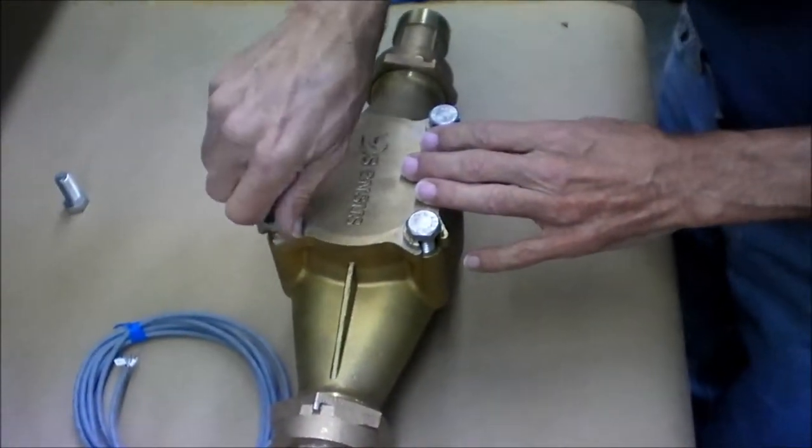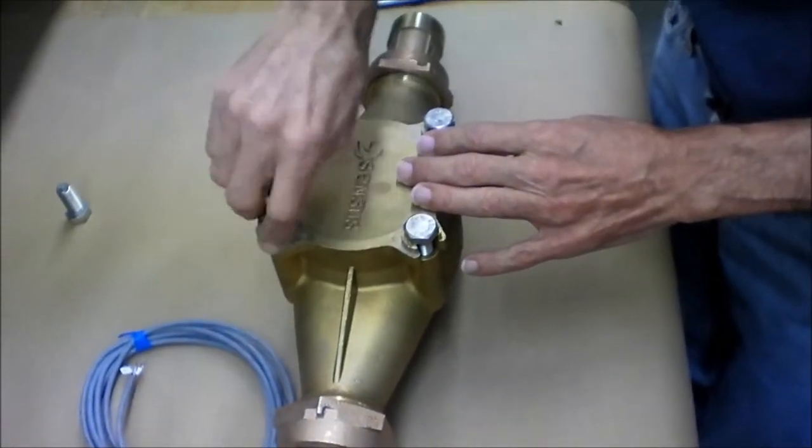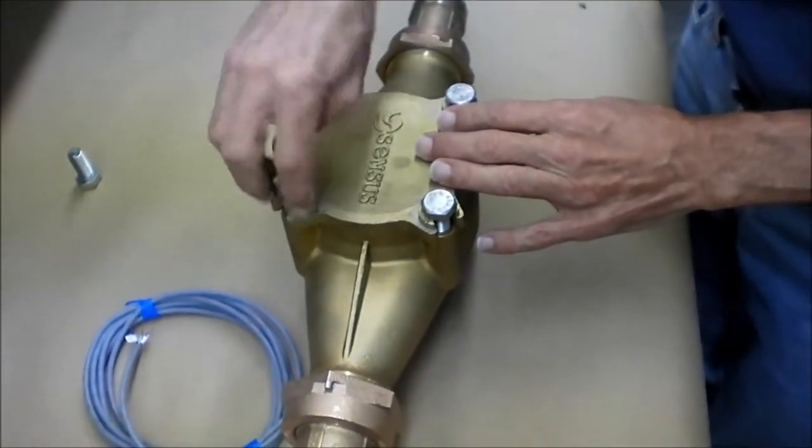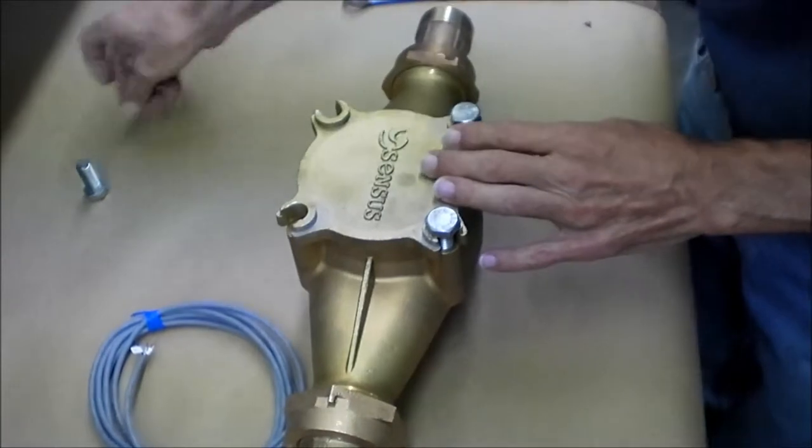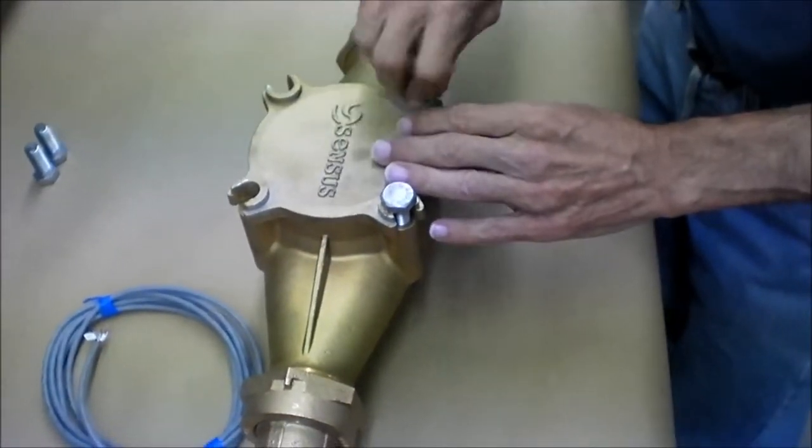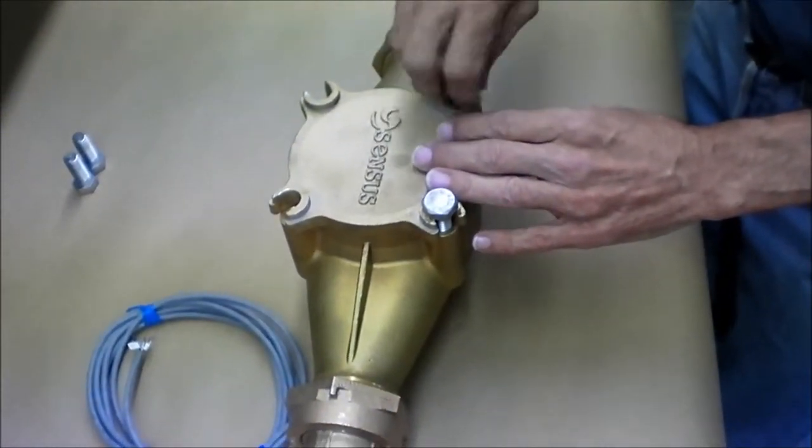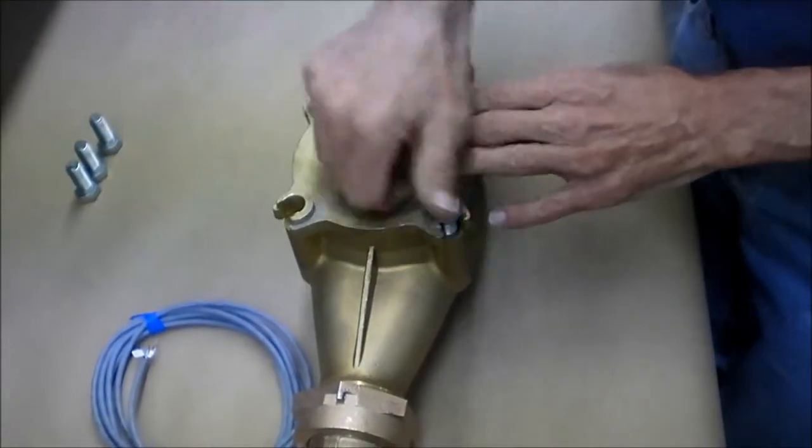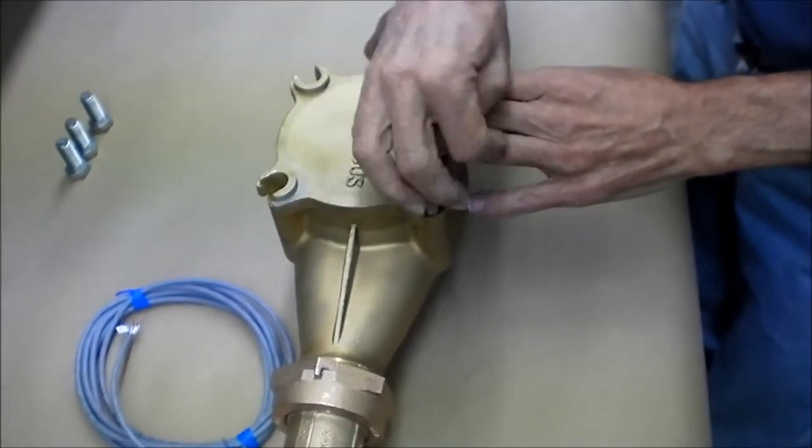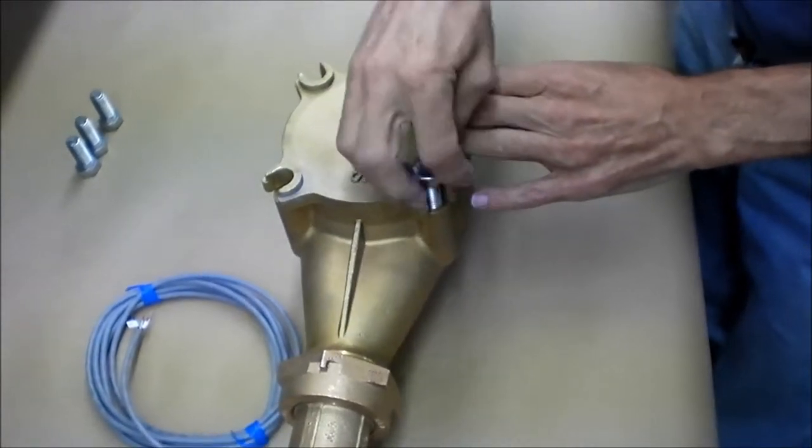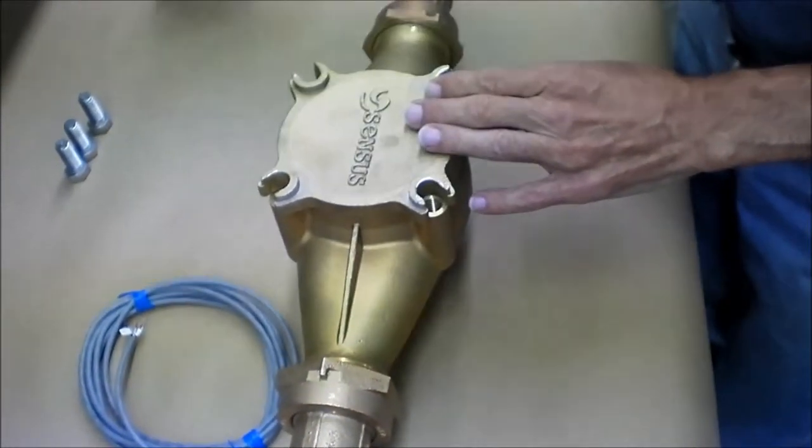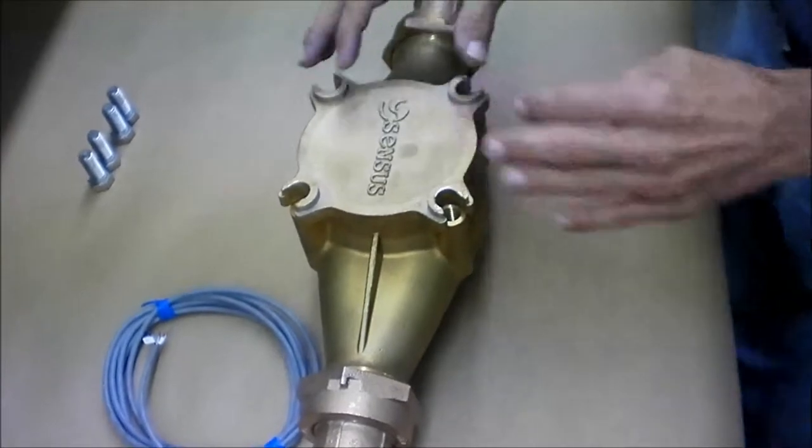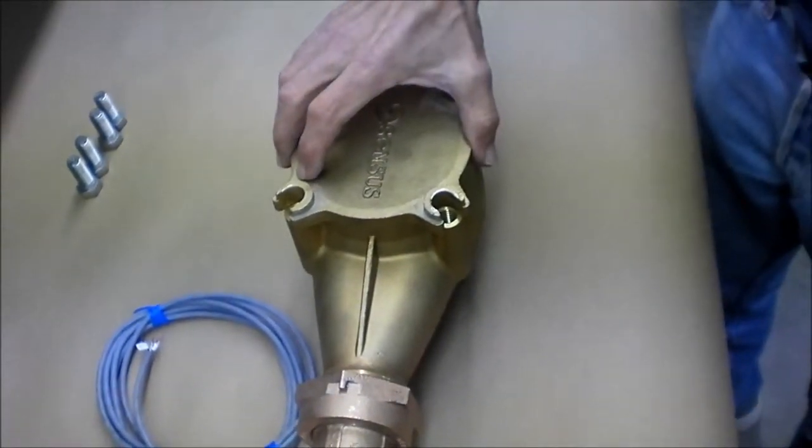The important thing to remember when disassembling and assembling your meter is that the O-rings are delicate. They can be stretched beyond their size easily, and the plastic parts can be nicked by sharp objects. So anytime you're removing O-rings and putting them back in place, you need to make sure that you don't do any scraping of the O-ring or the plastic holding it.